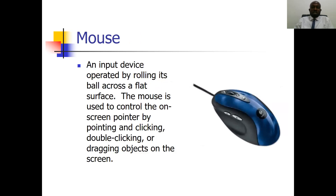The mouse is an input device operated by rolling its ball across a flat surface. The mouse is used to control the on-screen pointer by pointing, clicking, double-clicking, and dragging objects on the screen. Double-clicking means clicking the mouse twice in two quick sessions — when you click, you don't leave a space between clicks. That is what we mean by double-clicking.